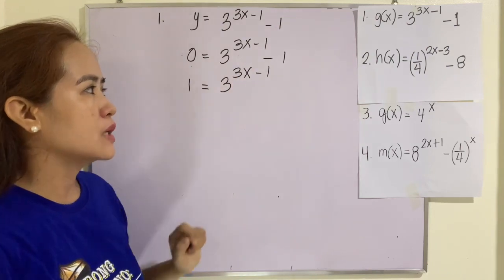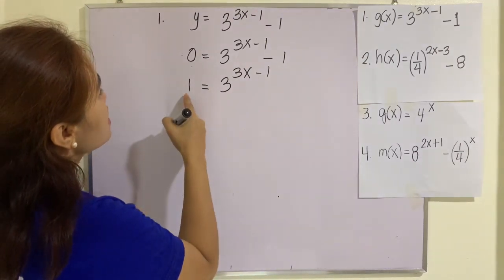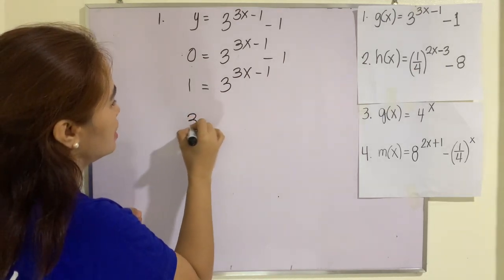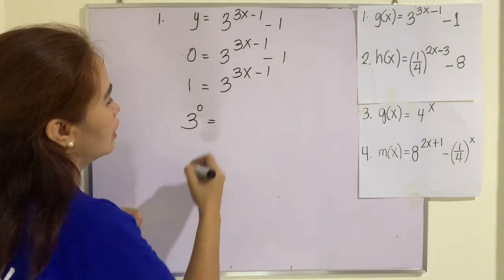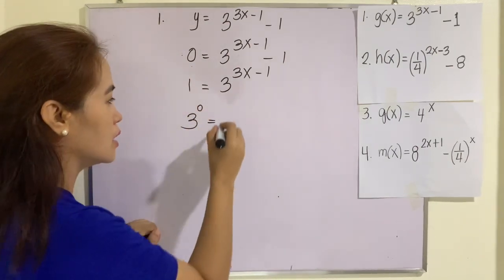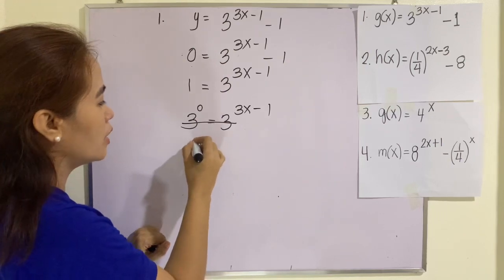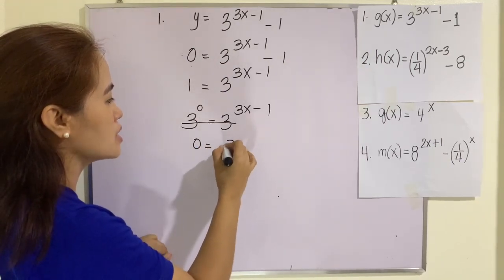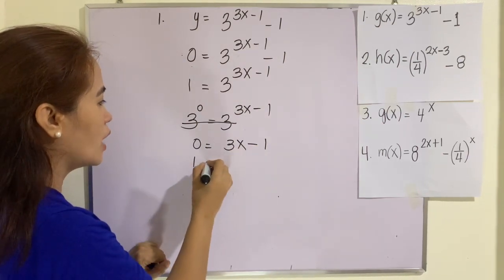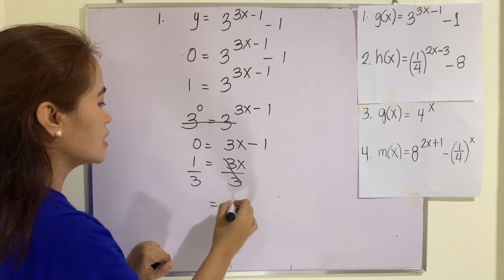To solve for x, we make this an exponential equation by writing 1 as base 3 raised to 0, since any base other than 0 raised to 0 is equal to 1. So 3 raised to 0 equals 3 raised to (3x minus 1), giving us 0 equals 3x minus 1. Solving for x: 1 equals 3x, divided by 3, so x equals one-third.